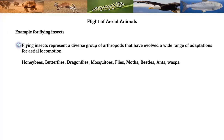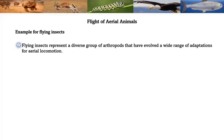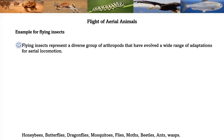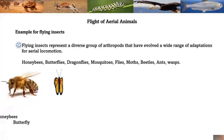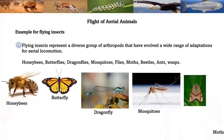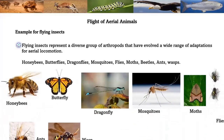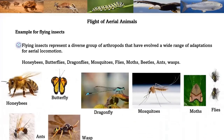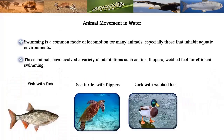Flying insects represent a diverse group of arthropods that have evolved a wide range of adaptations for aerial locomotion. Examples of flying insects include honeybees, butterflies, dragonflies, mosquitoes, flies, moths, beetles, ants, and wasps.